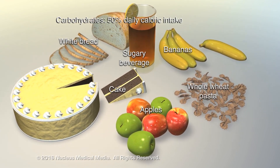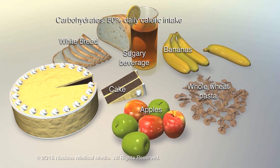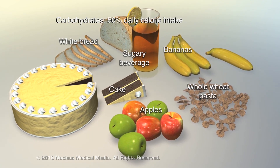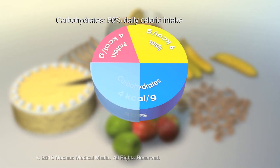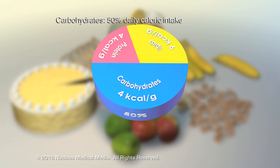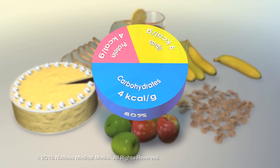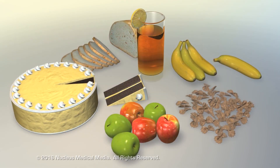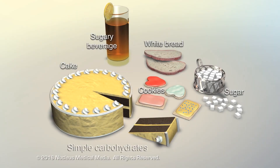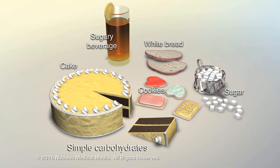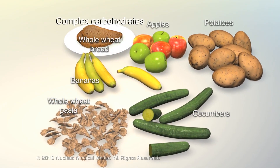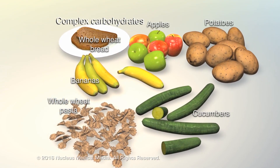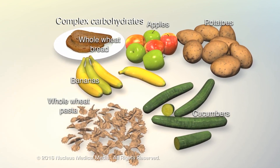The recommended daily allowance of carbohydrates for a normal weight adult is 125 to 175 grams, or approximately 50% of their caloric intake. Carbohydrates are used by the body primarily as fuel. They can be simple carbohydrates, such as table sugar or corn syrup, or they can be complex carbohydrates like pasta, vegetables, and whole wheat breads.